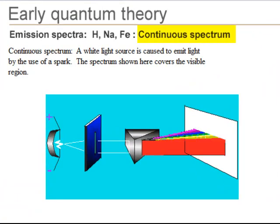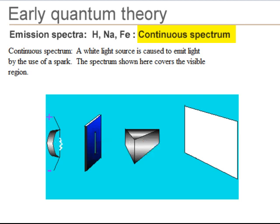A continuous spectrum is produced from a spark. All the colors of the visible spectrum are shown here.